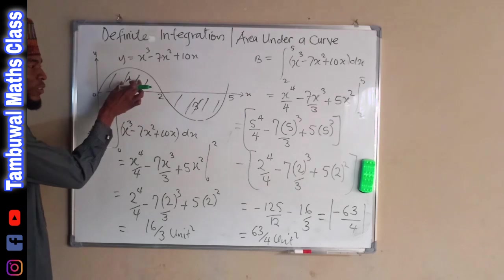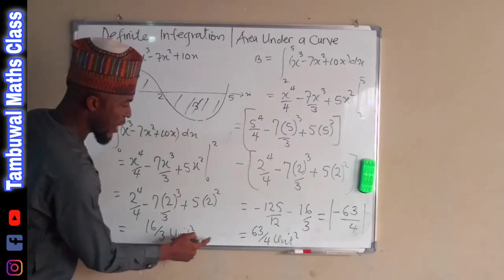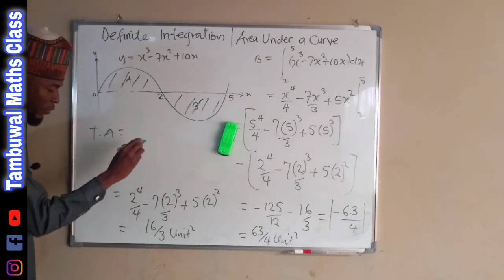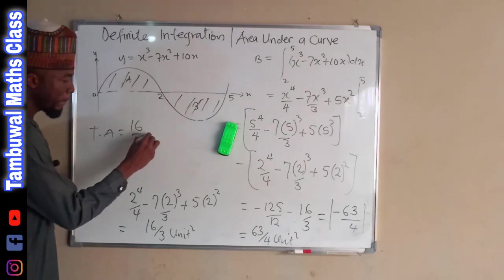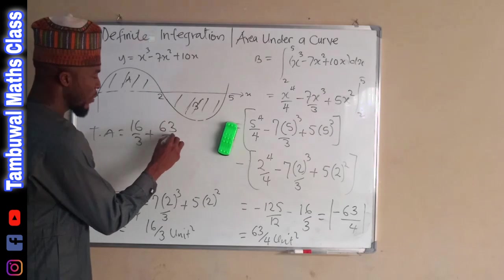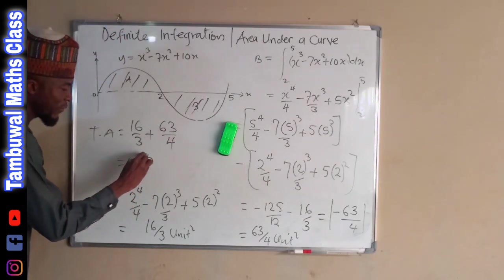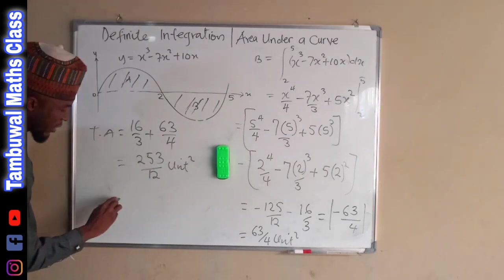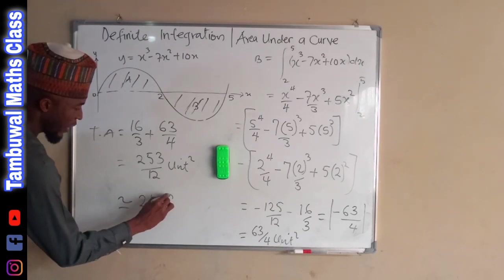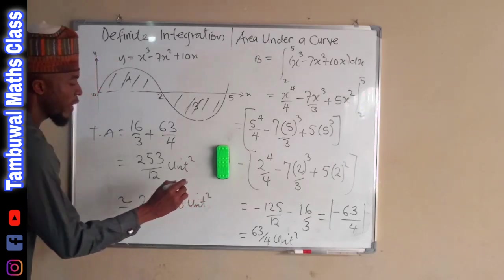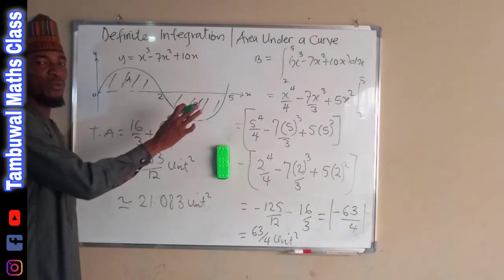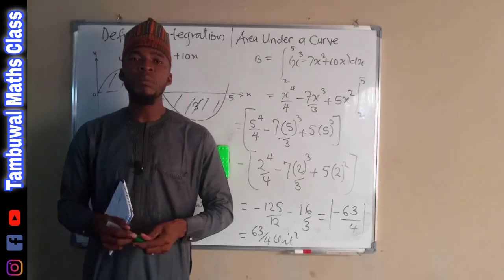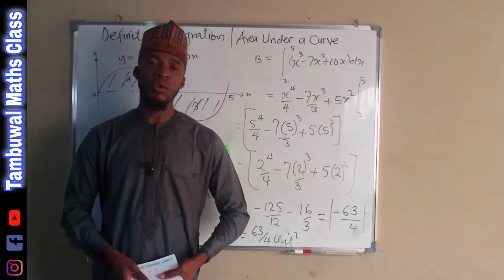The question asks for the total area, so we add area A and area B together: 16 over 3 plus 63 over 4, which equals 253 over 12 unit squared, approximately equal to 21.083 unit squared. This is the total area of these two curves. Thank you for watching. Do share with your learning colleagues, don't forget to subscribe to my channel, and press the bell icon so that you will be notified whenever I upload new content.